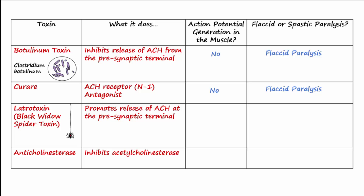Latrotoxin, more commonly known as black widow spider toxin, promotes the release of acetylcholine from the presynaptic terminal. Increased acetylcholine released into the synaptic cleft leads to increased frequency of action potentials being generated in the muscle, which causes excess muscle contraction or tetany. The muscle is unable to relax, resulting in spastic paralysis.